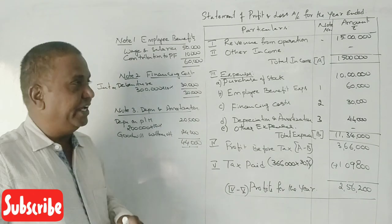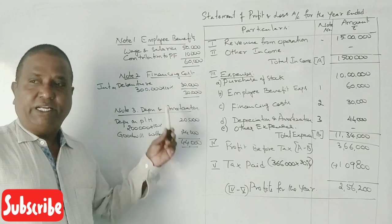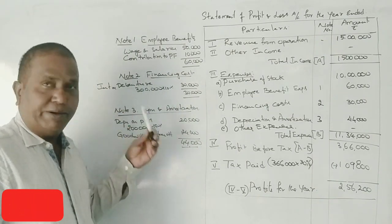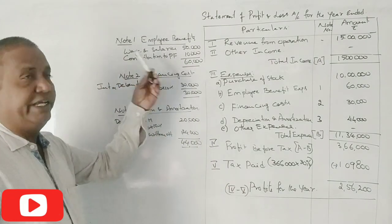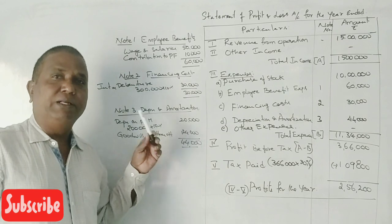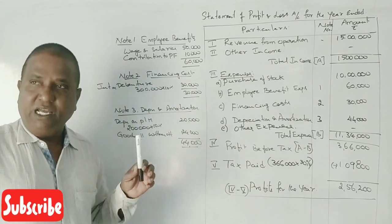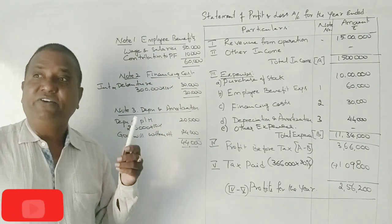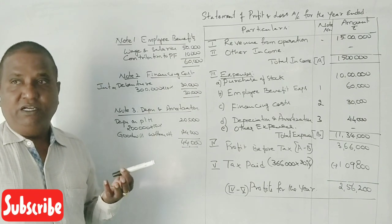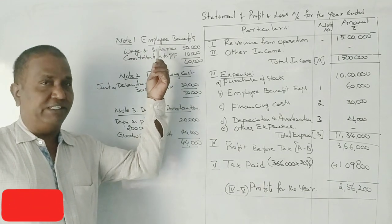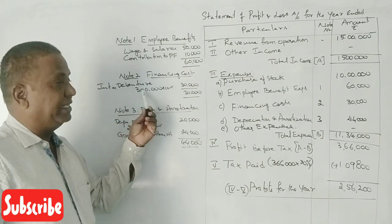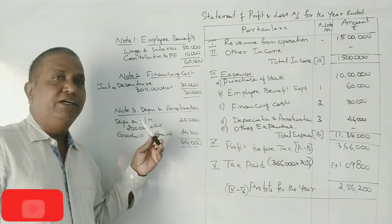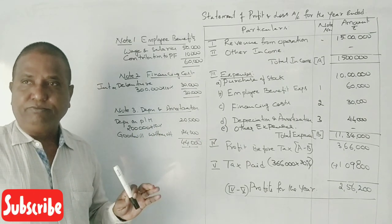Note numbers 1, 2, and 3 need to be written in the answer book. The notes cover: employee benefits — wages, salaries, and contribution to Provident Fund; interest on debentures under financing costs; and depreciation and goodwill written off under depreciation and amortization.